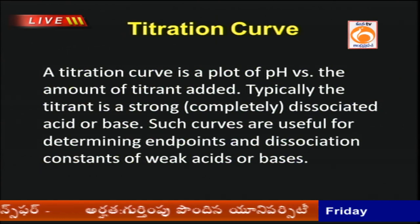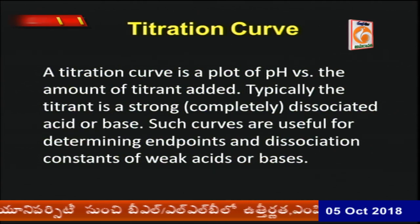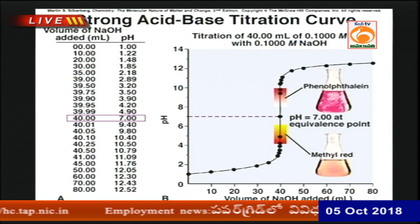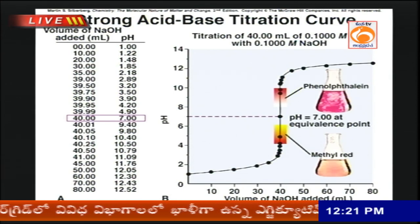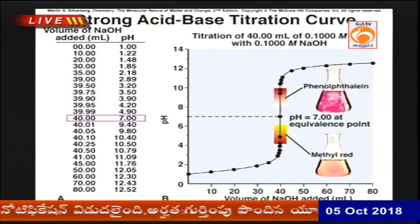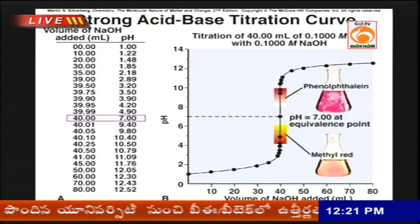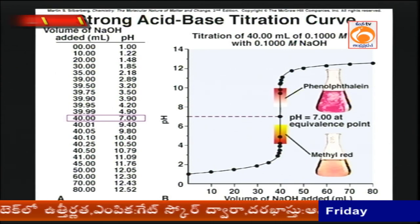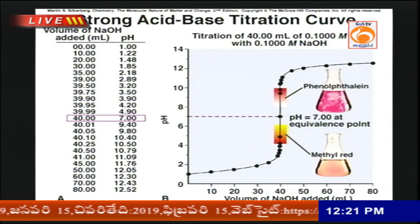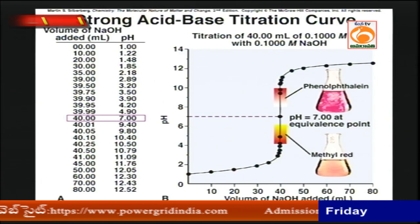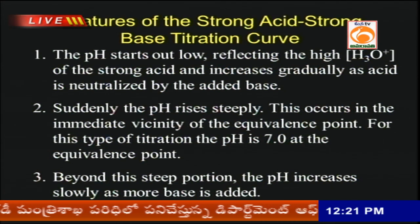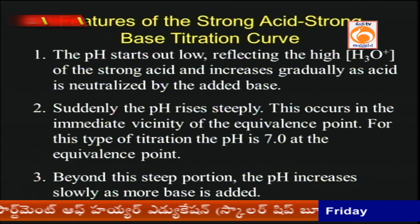Let us take up the titration curves for different acid-base titrations. For a strong acid and a strong base, such as HCl and sodium hydroxide, the equivalence point is at pH 7 because both ionize completely. The x-axis shows the volume of sodium hydroxide added to HCl, and there is a sudden rise in pH at the equivalence point. Methyl orange and methyl red are mostly used as indicators for this particular titration.